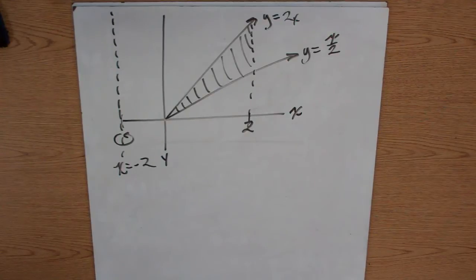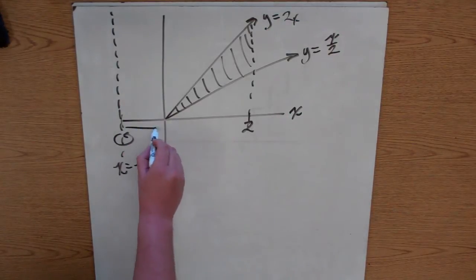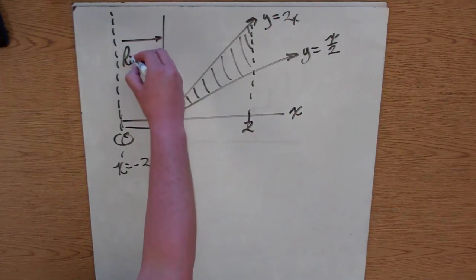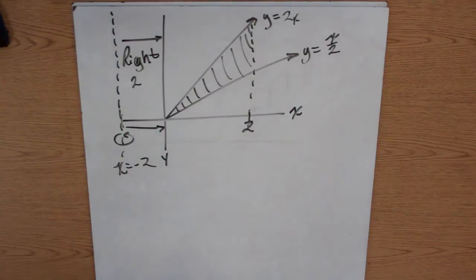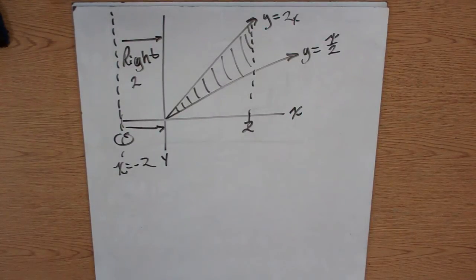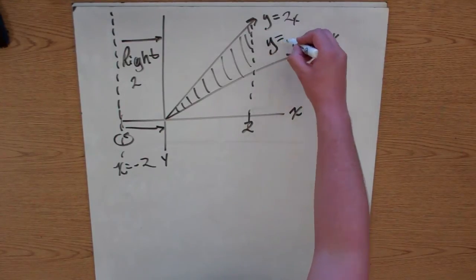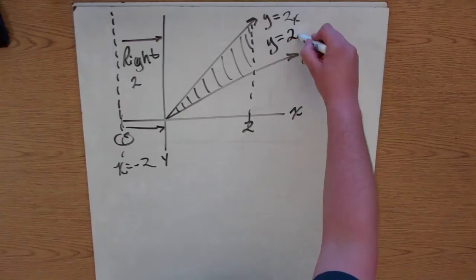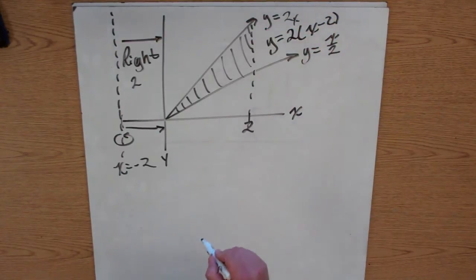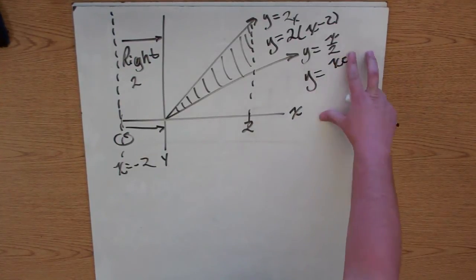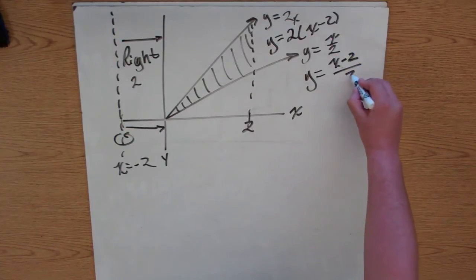So again, you have to figure out what do I got to do to get to the y-axis. Well, to get to the right axis, I have to go to the right 2. But if you remember, to go to the right, to move a function right, you have to add or subtract 2 to x. Hopefully you said subtract 2. So our new function here is going to be y equals 2, parenthesis, x minus 2. And this one is going to be y equals x minus 2 over 2.